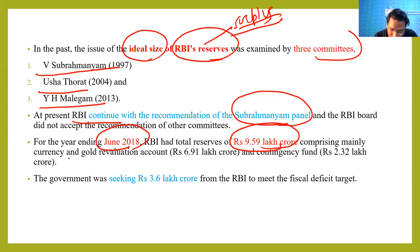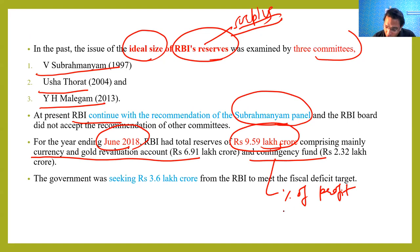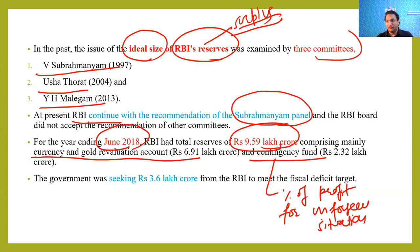The prices of gold and dollar fluctuate, and due to this fluctuation there is revaluation, which is kept in a separate revaluation account. The contingency fund is a certain percentage of profit which the RBI keeps for unforeseen situations. Just as any common person keeps extra money in a bank account for family emergencies, RBI also keeps this contingency fund to meet various emergency requirements.